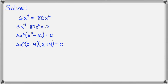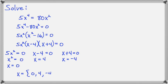Now I have three factors, and each factor will give a solution. 5x squared equals 0 gives me a solution of 0. x minus 4 equals 0 gives me a solution of x equals 4. And x plus 4 equals 0 gives me a solution of x equals negative 4. So our three solutions in this case are 0, 4, and negative 4.